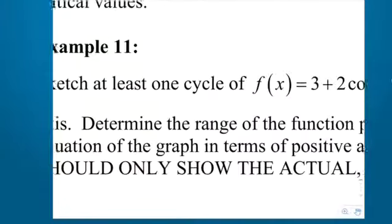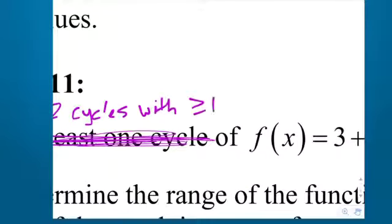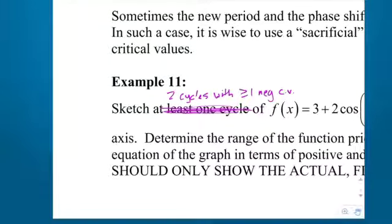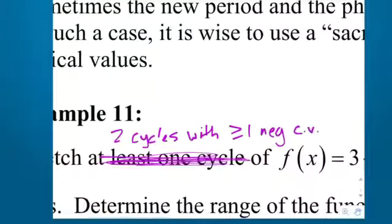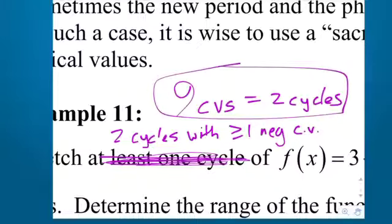It says sketch at least one cycle. My new instructions are: at least two cycles with greater than or equal to one negative critical value. You always have to have at least one critical value in negative land. Nine critical values equals two cycles — it takes five for one, but only nine for two, because the fifth critical value is both the last for the first cycle and the first for the next cycle.